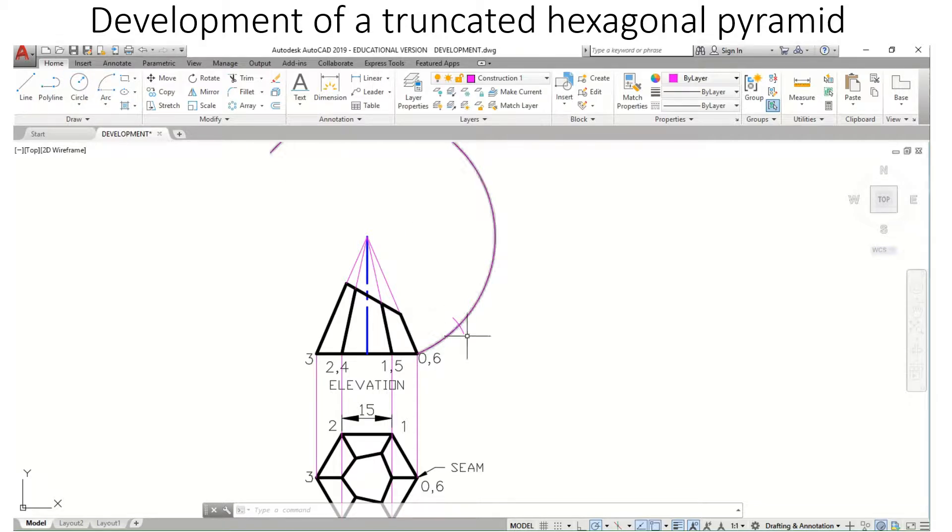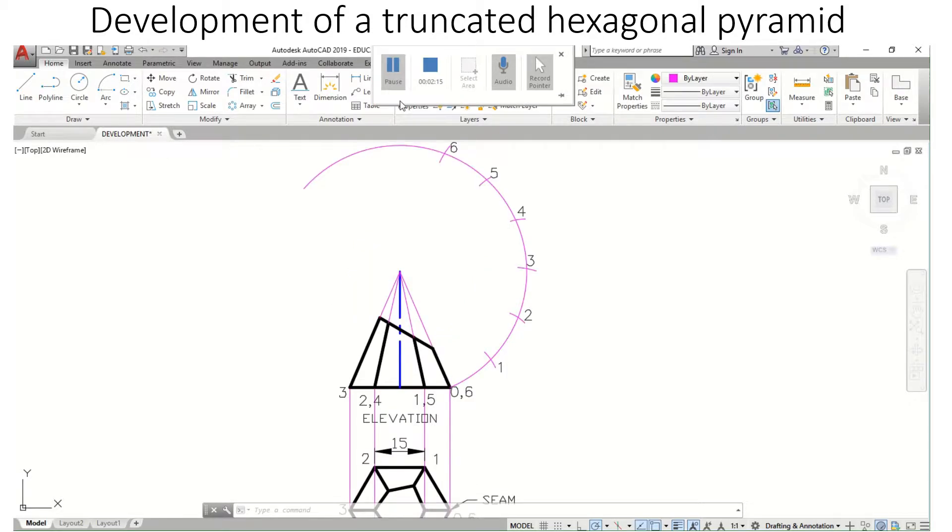I'm going to repeat the process. Measurement is 15. That's 2 and I'm going to keep going until I get 6. There we have our 6 mark-offs which will be equal to our 6 sides from our plan, the perimeter of the base of our pyramid.